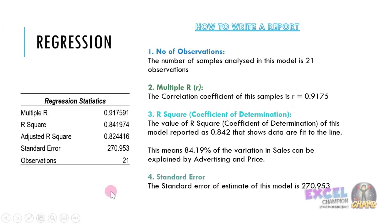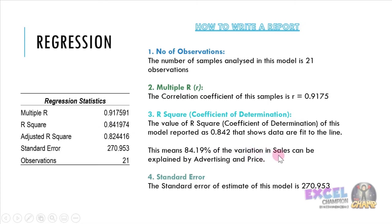For regression, these are the results. We need to explain the regression statistics one by one. The number of samples involved in this model is 21. Multiple R refers to the correlation coefficient for the whole model, which is 0.9175. R-squared, the coefficient of determination, shows that 84.19% of variation in sales can be explained by advertising and price. The standard error of estimate for this model is 270.953.